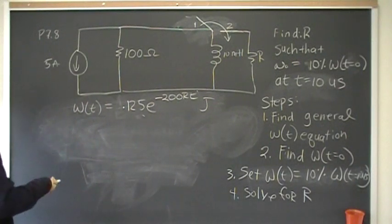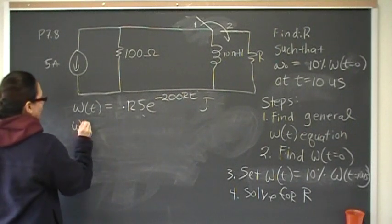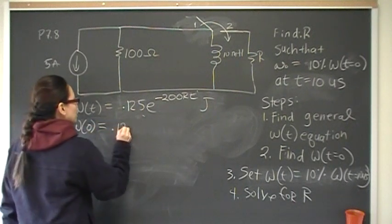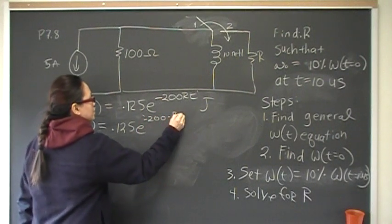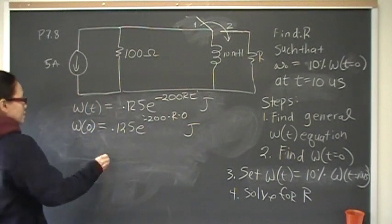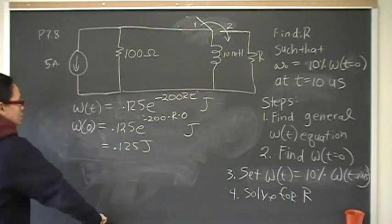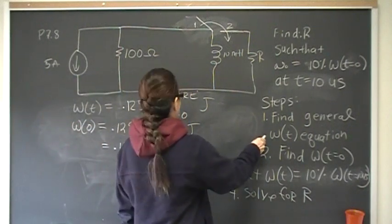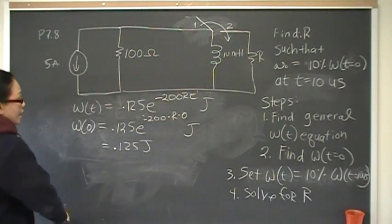Okay, now that I have that, I can find what the initial energy stored is. The initial energy is just energy at times 0. So energy at times 0 will be 0.125 E to the negative 200 times R times 0 joules. So E to the 0 is 1, so that means at times 0, I have 0.125 joules. Good. So now, I have done that step. I found the general equation that's, I found the general equation. I found energy at times 0, and that is 0.125.